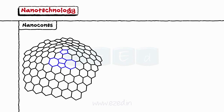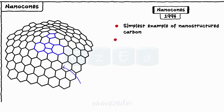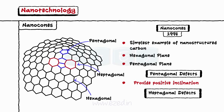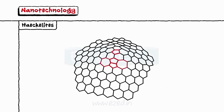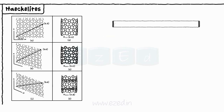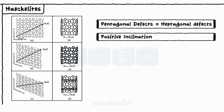Let's study what are nanocones. Carbon nanocones were discovered in 1994, and are the simplest example of nanostructured carbon. They are made of hexagonal planes with different numbers of pentagonal defects. These pentagonal defects produce a positive inclination. Similarly, heptagonal defects are also observed, which provide negative inclination. The presence of pentagons and heptagons in fullerene modifies its electrical properties. Thus, a new hypothetical type of graphene sheet is proposed, which allows pentagonal and heptagonal defects provided their number is same. Hence, negative inclination due to heptagons will be balanced by the positive inclination of pentagons.